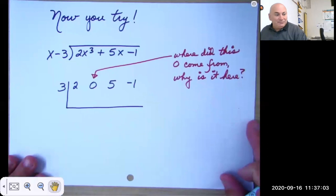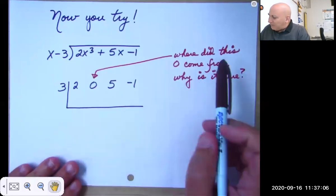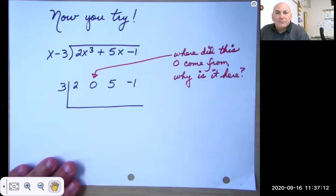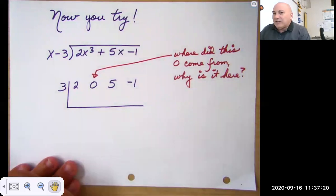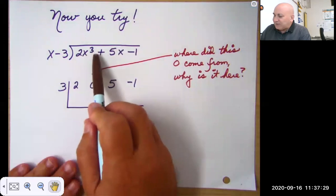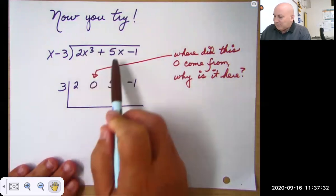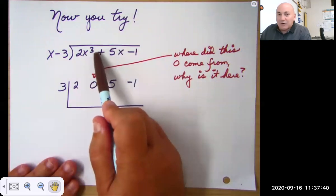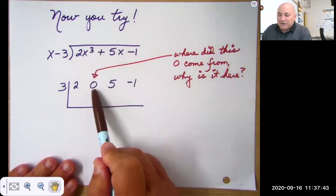So now you try. And where did this 0 come from? Why is it here? You're waiting for me to answer, I want you to answer. But now I'll tell you the answer. In the last slide, I said you must make sure that you have accounted for every power of x. 2x cubed plus 0x squared plus 5x minus 1. In polynomial long division, you would know to put in a 0x squared here. You need to put in a 0 here as well.